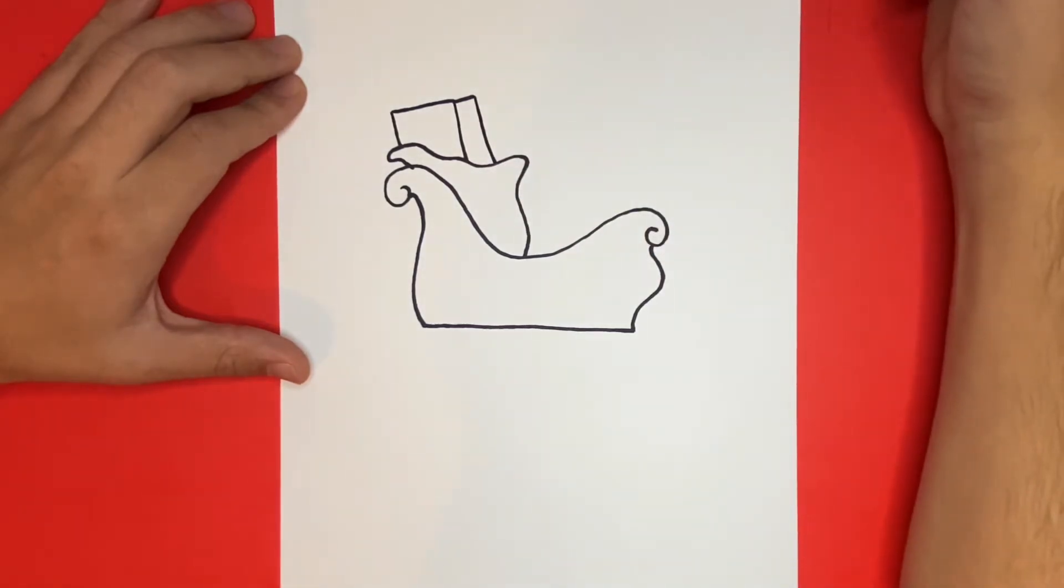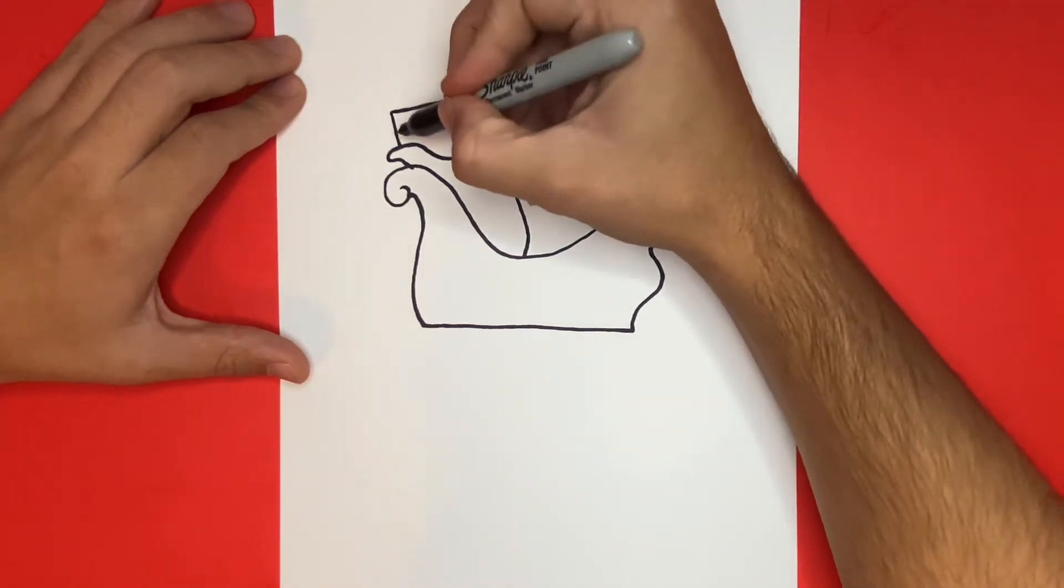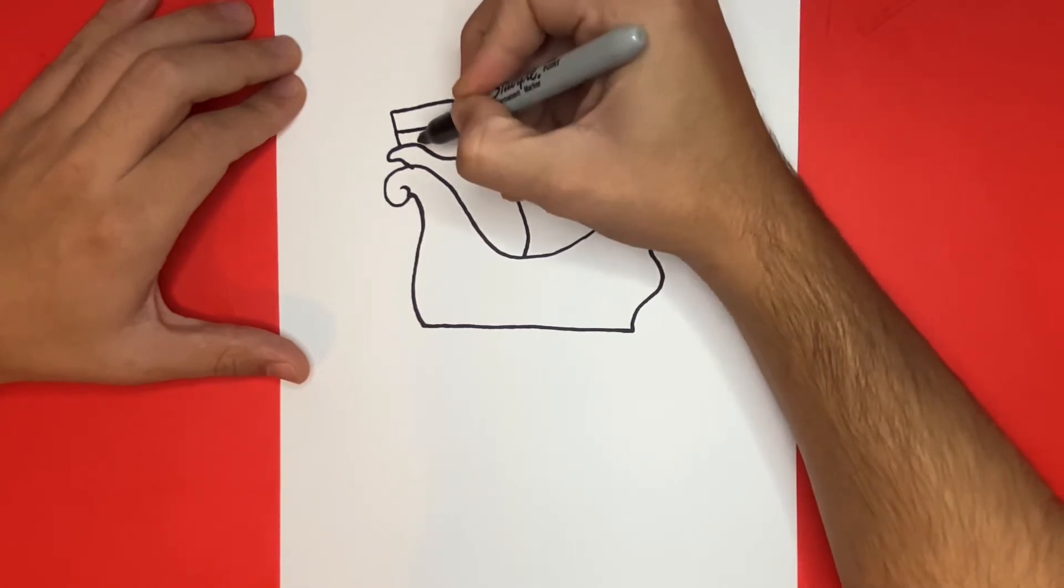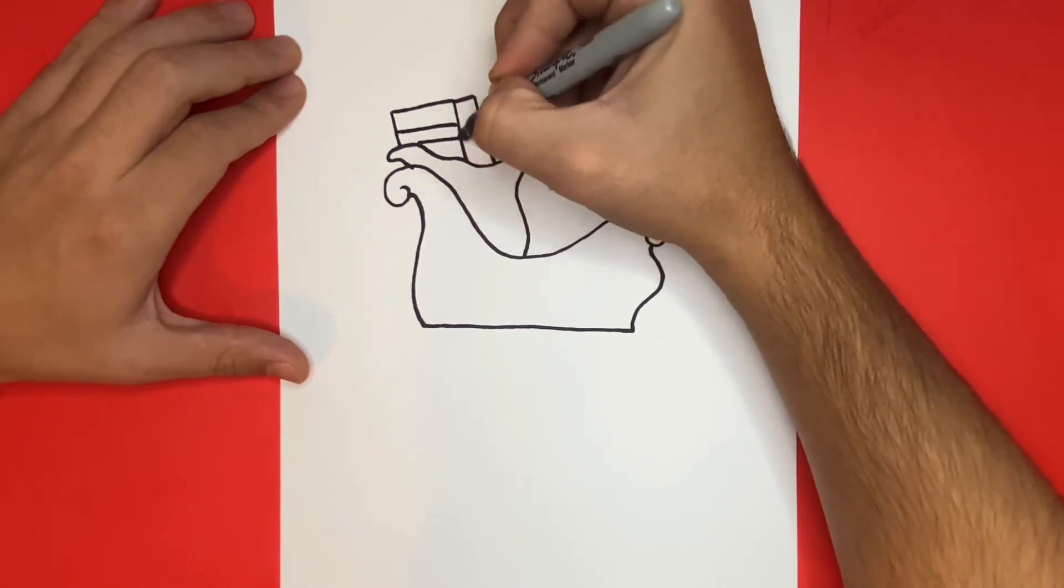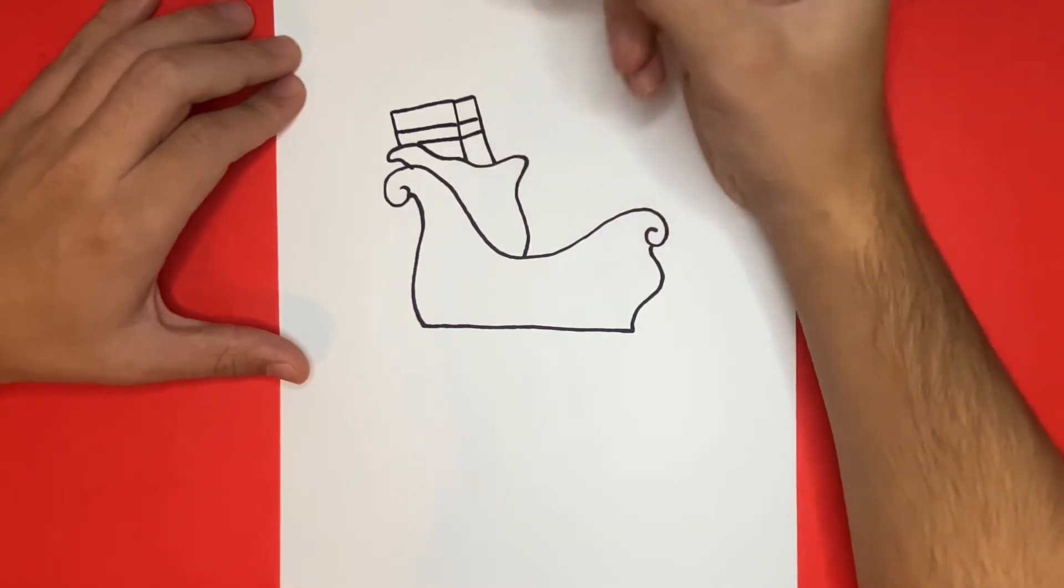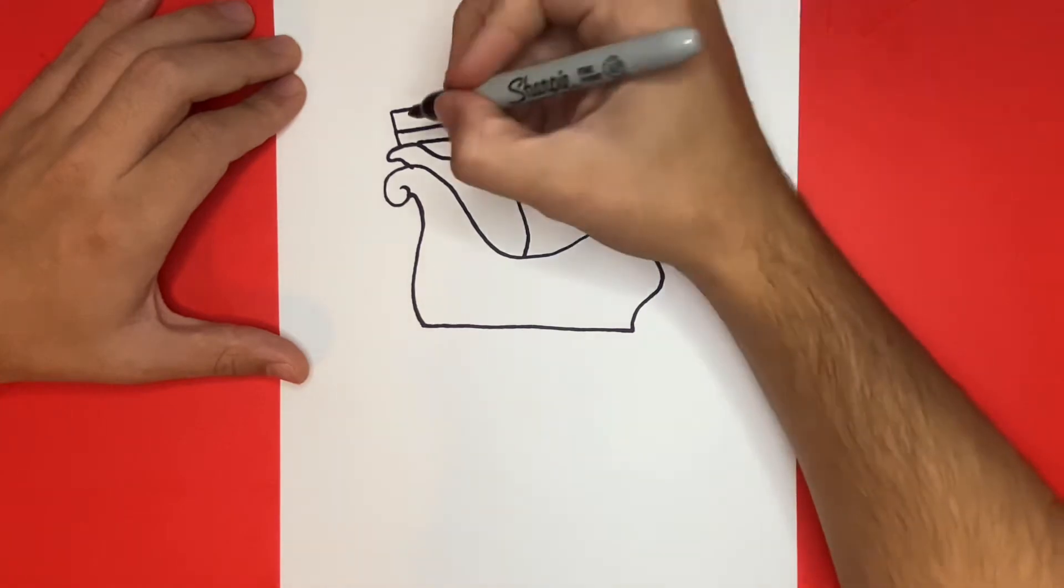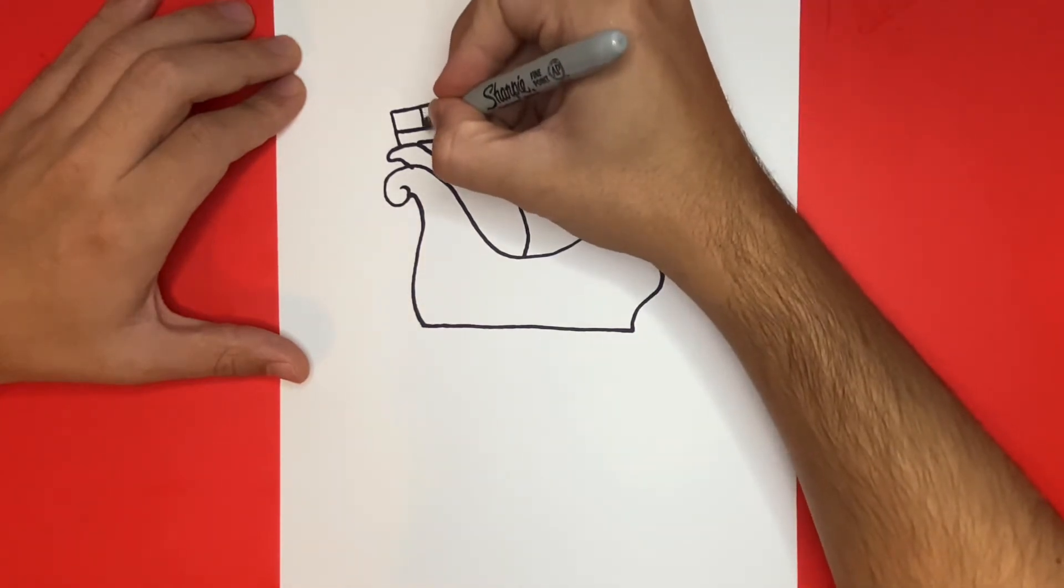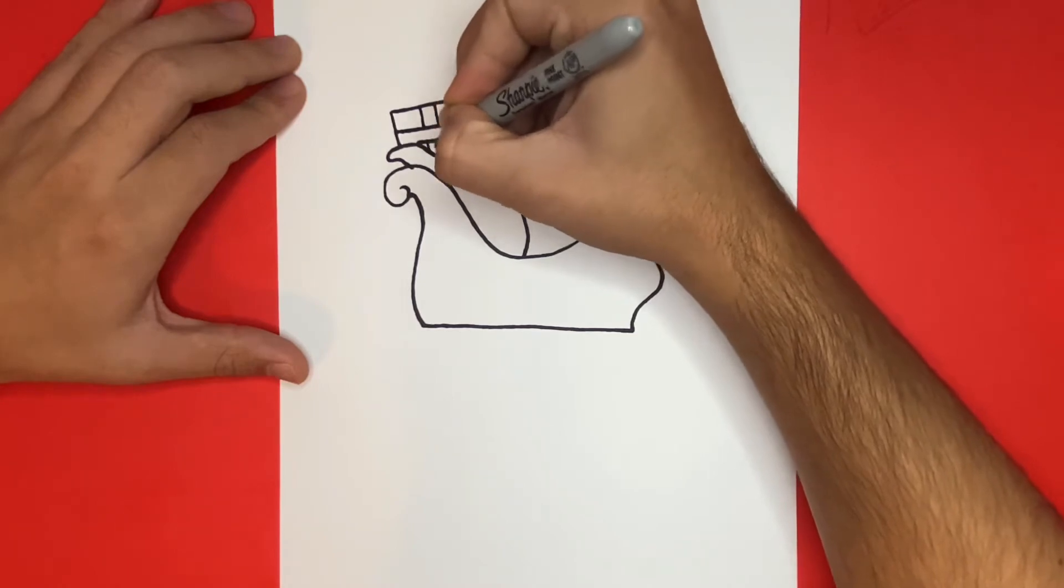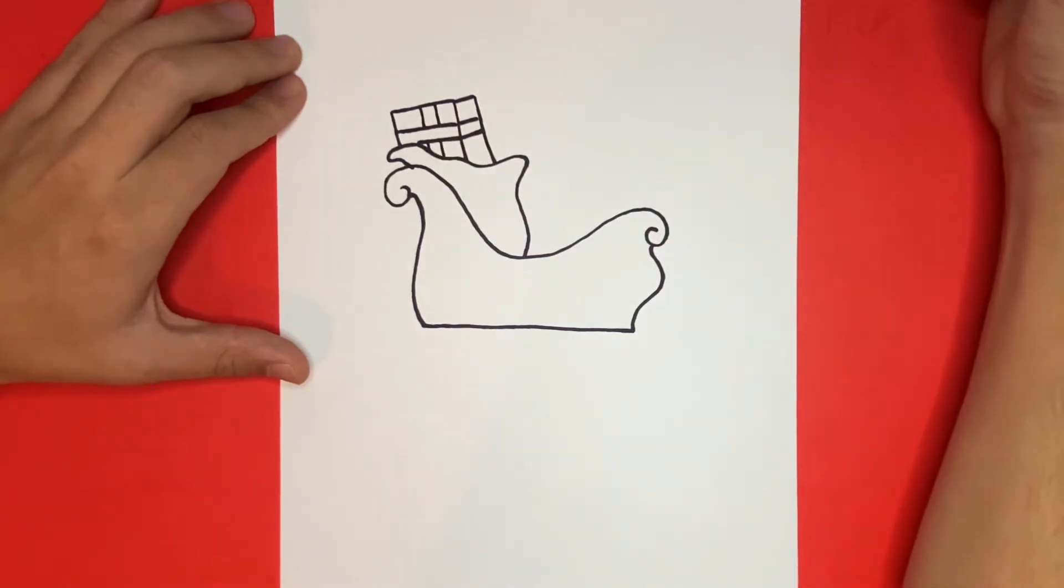Next to add detail to our presents we're going to draw rectangular like shapes going across as well as up and down. On the top of our present we can add in a small design that will look similar to a bow.